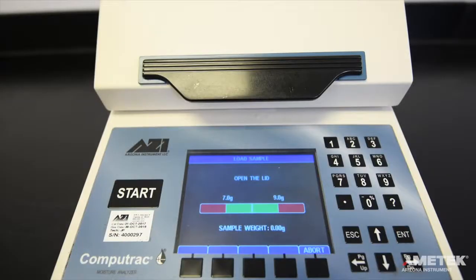Once the instrument is finished taring the empty pan, a red and green bar graph will appear, along with a prompt to open the lid. The bar graph provides a visual indication of how much sample is acceptable for a particular test program. In this case, eight grams plus or minus one gram is acceptable and in green. Anything outside of this range is represented by the red part of the graph.